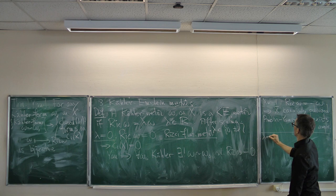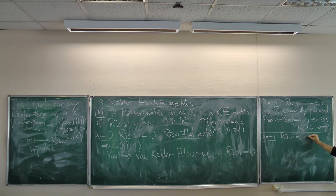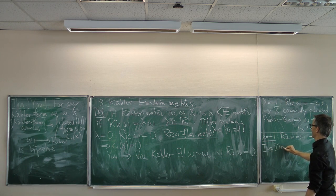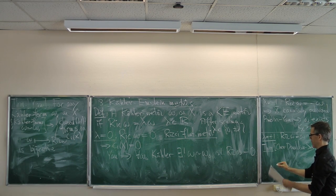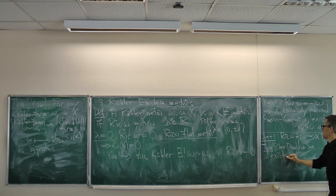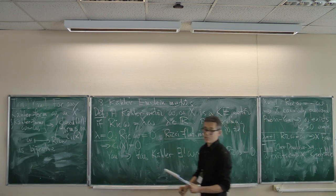Finally, when λ = +1, you want Ric(ω) = ω, which implies X is Fano — minus K_X is ample. But that's not sufficient. The theorem of Chen-Donaldson-Sun and many others implies that in the Fano case, a Kähler-Einstein metric exists if and only if X satisfies a stability condition — specifically X is K-polystable.